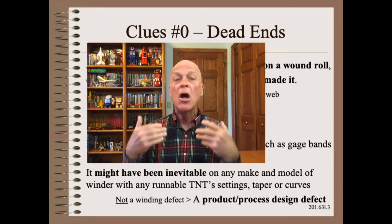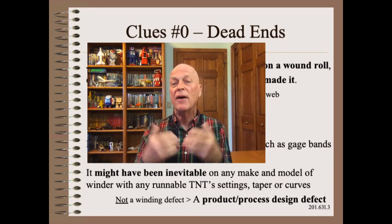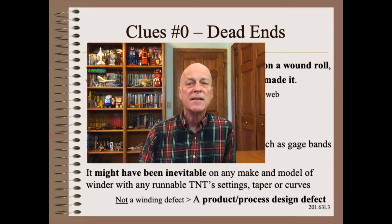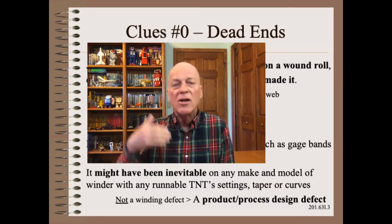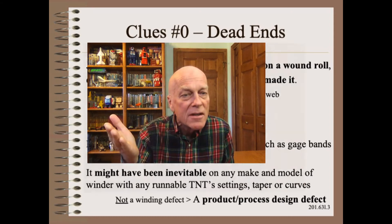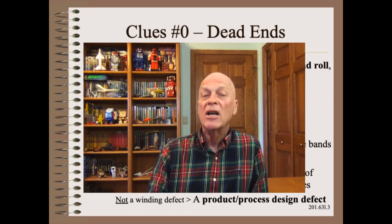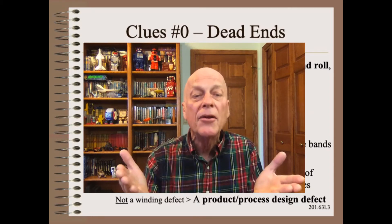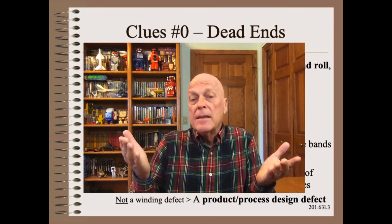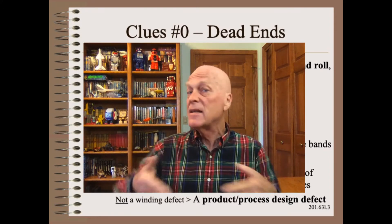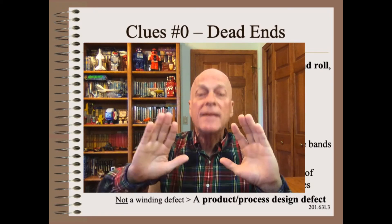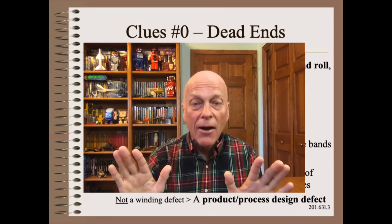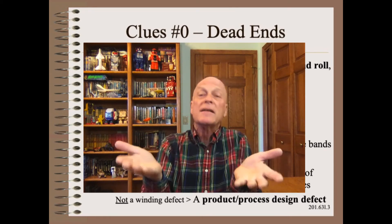Defects such as these are not winding defects, but rather product process design defects. As I teach in my advanced winding school, certain cases of blocking, bulk loss, core crush, poor roll ends, and others are best thought of as product process or DFM design problems rather than winding problems, because in extreme cases these defects have no winding solution. Stay tuned, because in a few slides I will tell you how to tell if the defect has a winding solution.